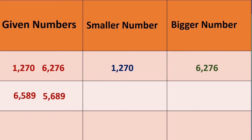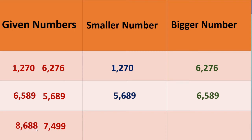Next numbers are 8688 and 7499. Here we have 8000 versus 7000. So 7499 is the smaller number and 8688 is the bigger number. I am sure that you can now decide which is smaller and which is bigger from the given numbers.